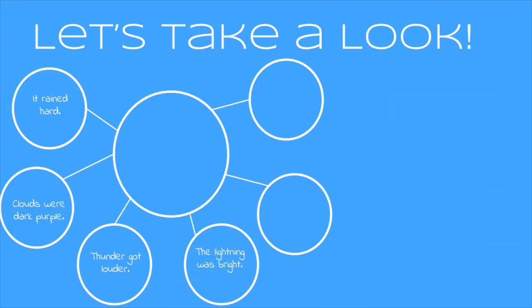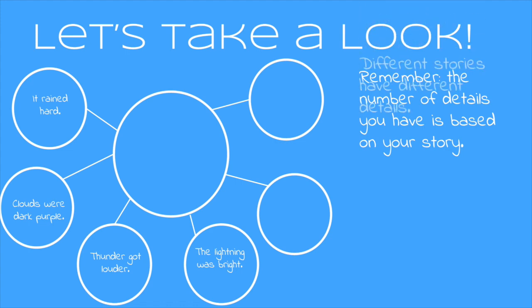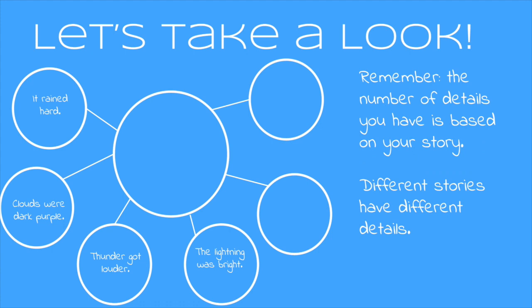Now that we have our graphic organizer with all of our details, we can start to think about main idea. It's important to remember that the number of details you have is based on your story. Different stories have different details. This story has four details. Other stories might only have two, or they might even have ten. You can add or take away circles as you need them. The important thing is that you go sentence by sentence to find the number of key details in your text.